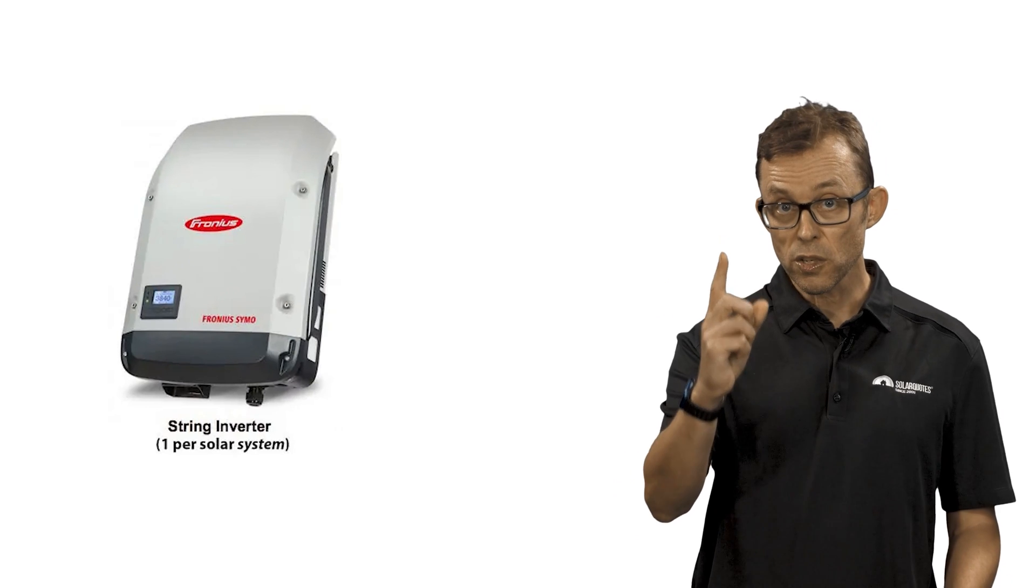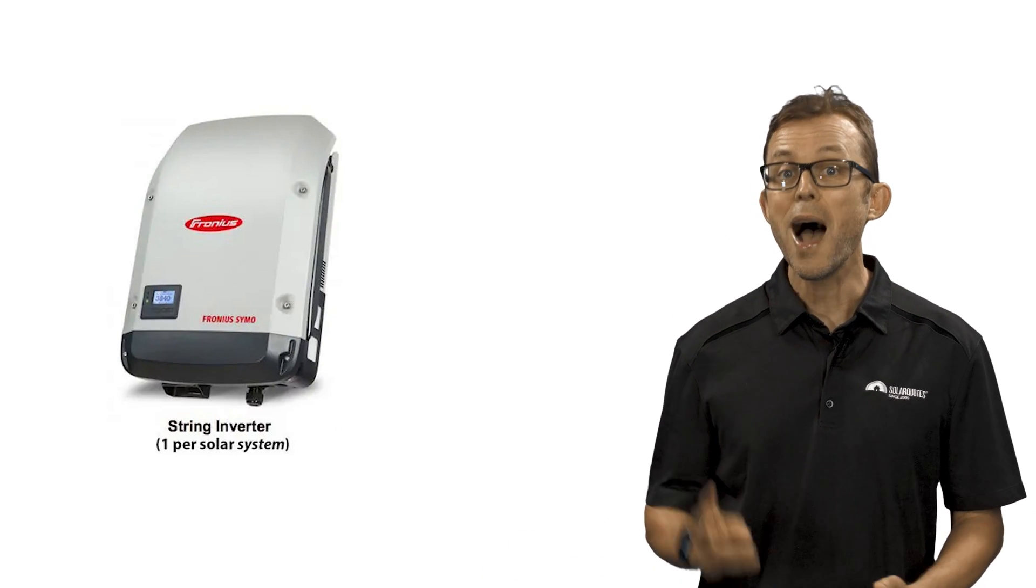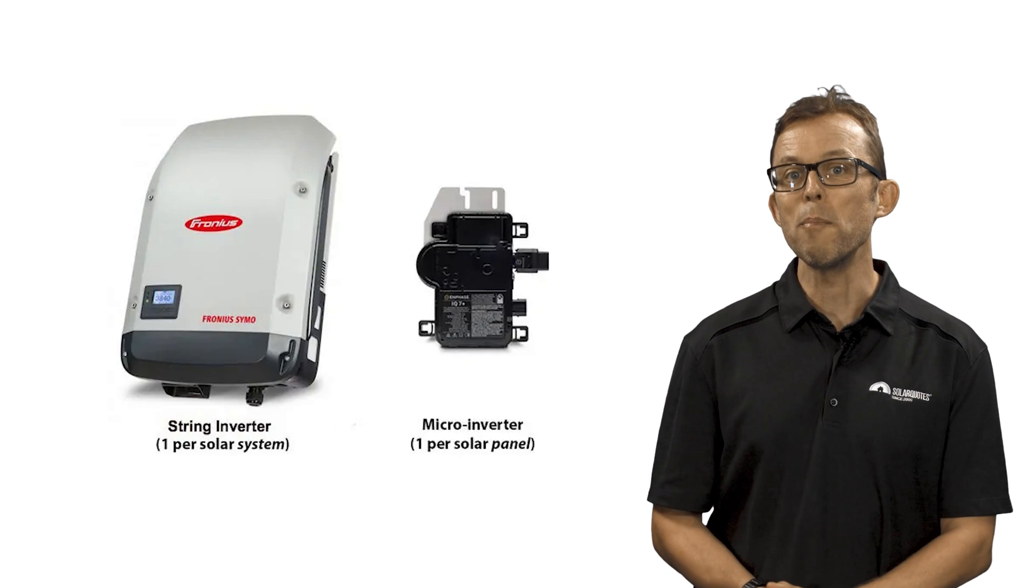Let's start talking about inverter technologies. Inverters come in two main varieties: string inverters, which are a big box that goes on the wall which all the solar panels connect into, and micro inverters that go on the back of each solar panel.